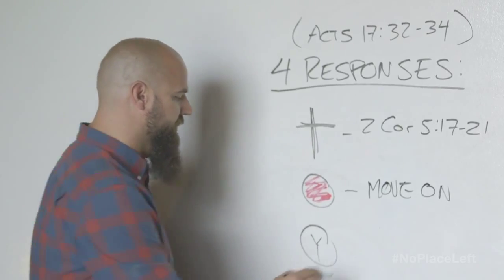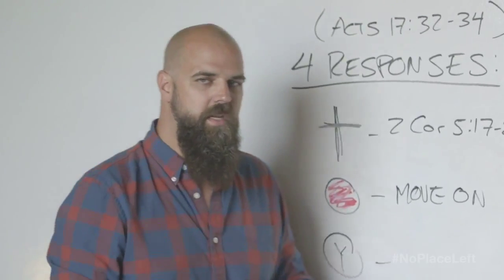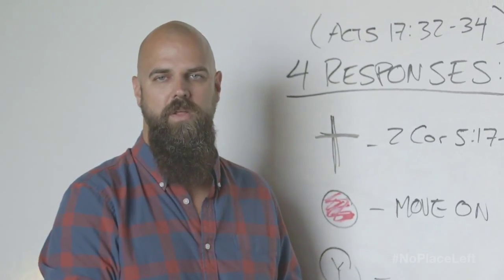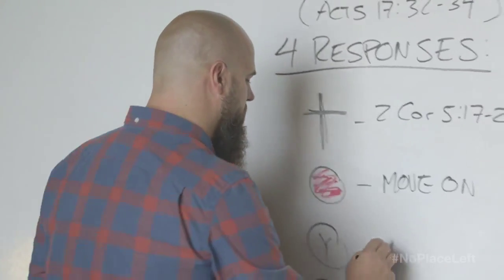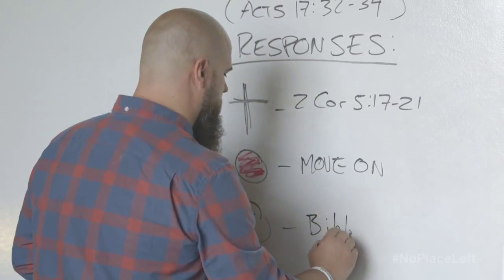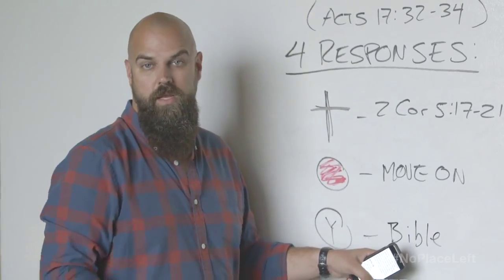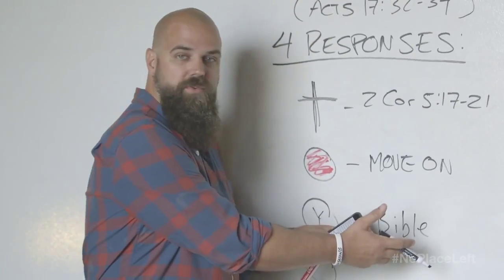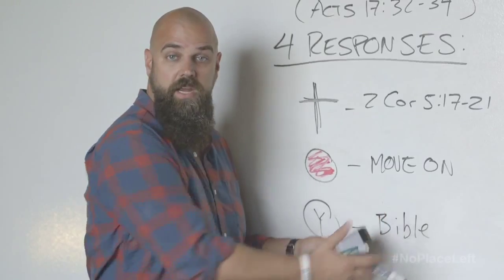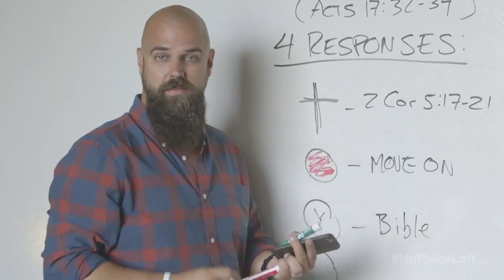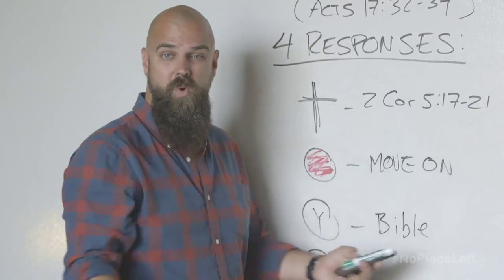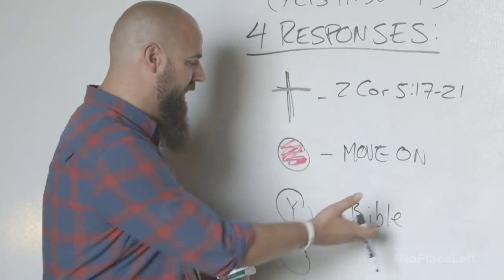Another type of person is what we call a yellow light person. They're interested but not yet ready to follow Jesus, so we invite them to look at the Bible together. 61% of lost people who won't go to church will study the Bible with a friend. We want to help them discover the truths of Jesus from the scriptures and encourage them to invite others. We ask them: when can we meet, where can we meet, and who else can you invite?